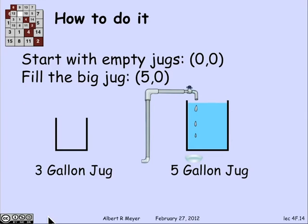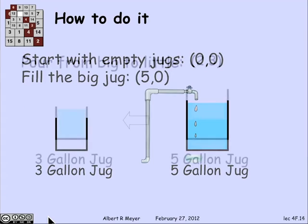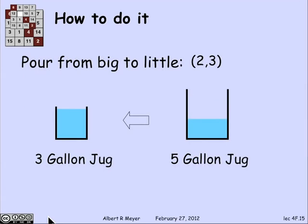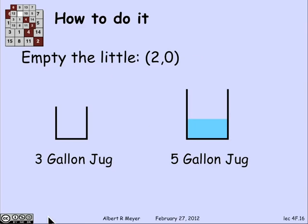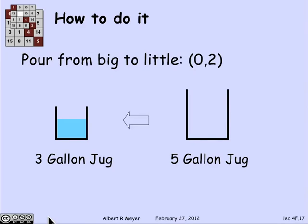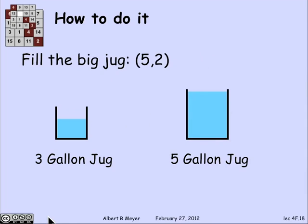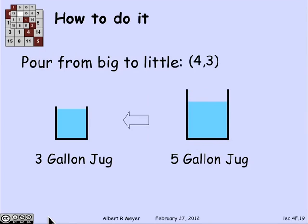The first move is to fill the big jug, taking us to state (5, 0), where the big jug has 5 and the little jug is empty. Then we pour from the big into the little — the little jug fills to 3, leaving 2 in the big jug. Now we empty the little one; we still have 2 in the big one. We pour from the big into the little, so the little has 2 gallons and the big is empty. Now we fill the big jug — 5 gallons in big, 2 in little. We pour from the 5-gallon jug until the 3-gallon jug is full, removing the 1 gallon the 3-gallon jug still had capacity for. We're left with a full 3 gallons in the little jug and 4 gallons — our target — in the big jug. The bomb doesn't go off.